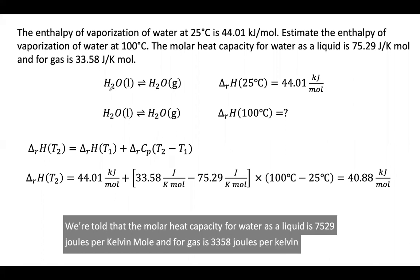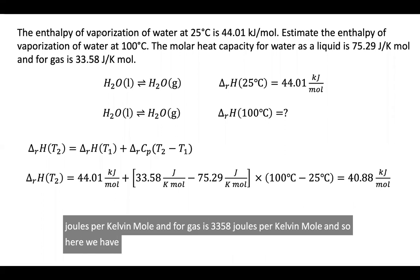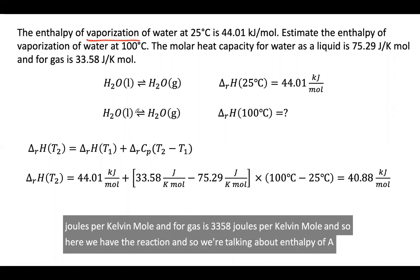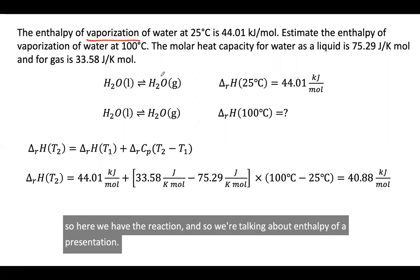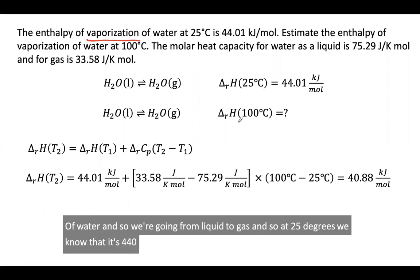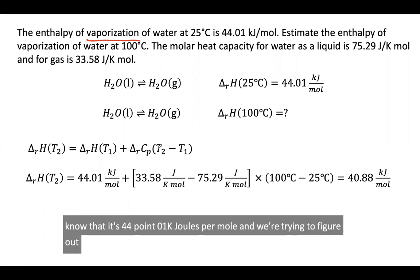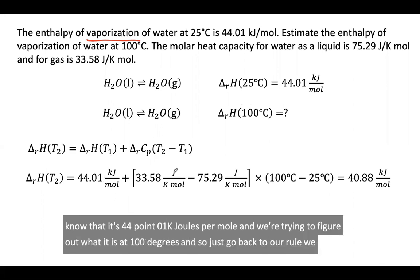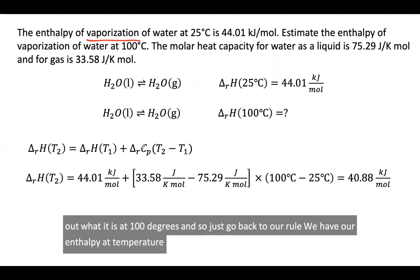Here we have the reaction. We're talking about enthalpy of vaporization of water, and so we're going from liquid to gas. At 25 degrees, we know that it's 44.01 kilojoules per mole, and we're trying to figure out what it is at 100 degrees. Just go back to our rule. We have our enthalpy at temperature one, we look at the change in heat capacities.